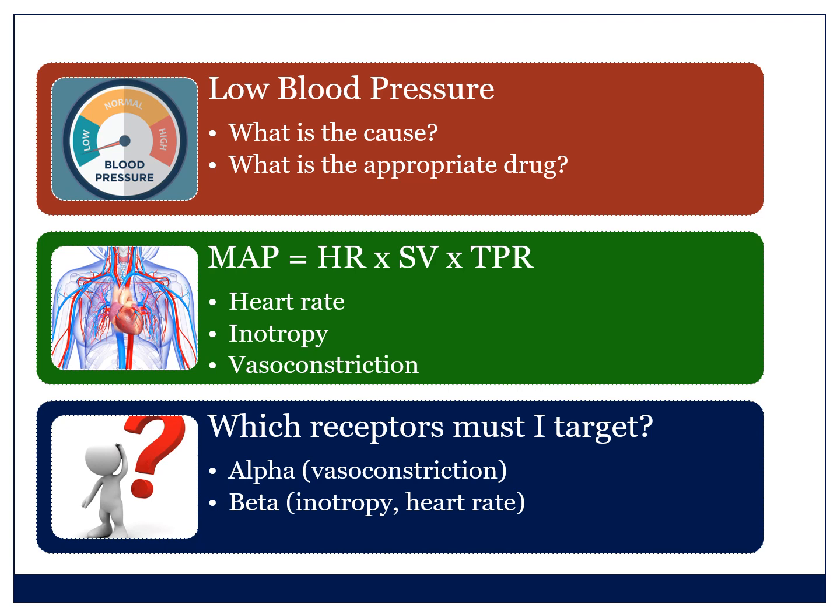We usually talk about alpha and beta receptors. Alpha receptors cause vasoconstriction when you stimulate them — stimulate alpha-one and you get vasoconstriction, but no effect on the heart. Beta receptors are responsible for positive inotropy and for increasing the heart rate. There is a separate set of receptors we may want to target depending on whether hypotension was caused by a failing heart, bradycardia, or vasodilation.